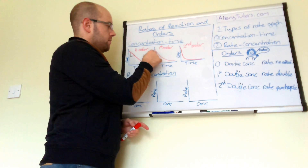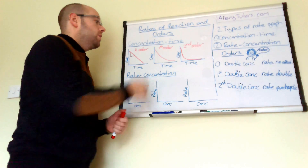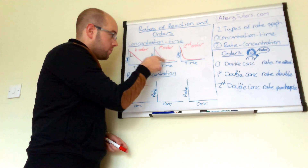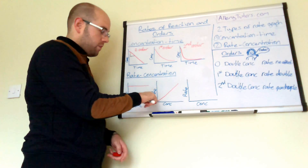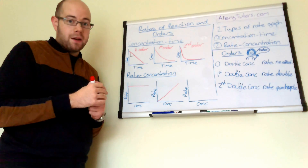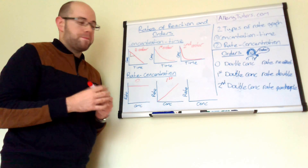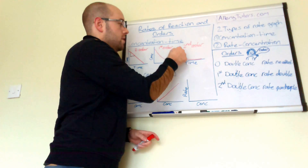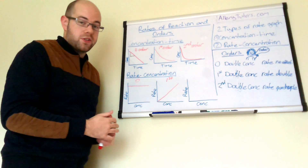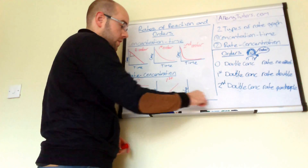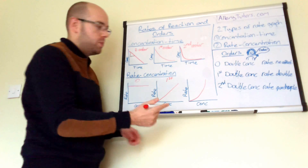Because the first order graph is a curve, we have to take gradients at different points. If we calculate the gradients at different points in that curve, the gradient tells us the rate of reaction. Plotting those rates against concentration, a first order graph gives us a straight line — if we increase the concentration, the rate increases by the same amount. For second order, calculating gradients across different points and plotting rate against concentration gives us a curve that bends upwards.